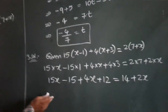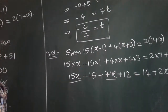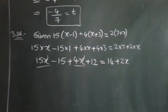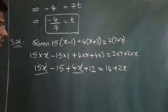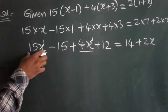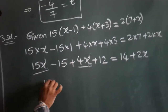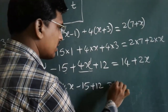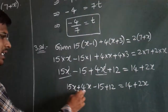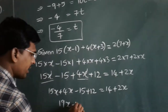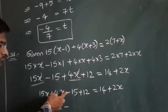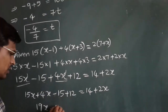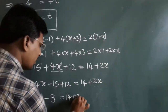To simplify the left hand side: 15x and 4x are like terms — both have the same variable x with the same power 1 — so we can add them. 15x plus 4x equals 19x. For the constant terms: minus 15 plus 12 — one is negative, one is positive, so we subtract — giving minus 3. So 19x minus 3 equals 14 plus 2x.